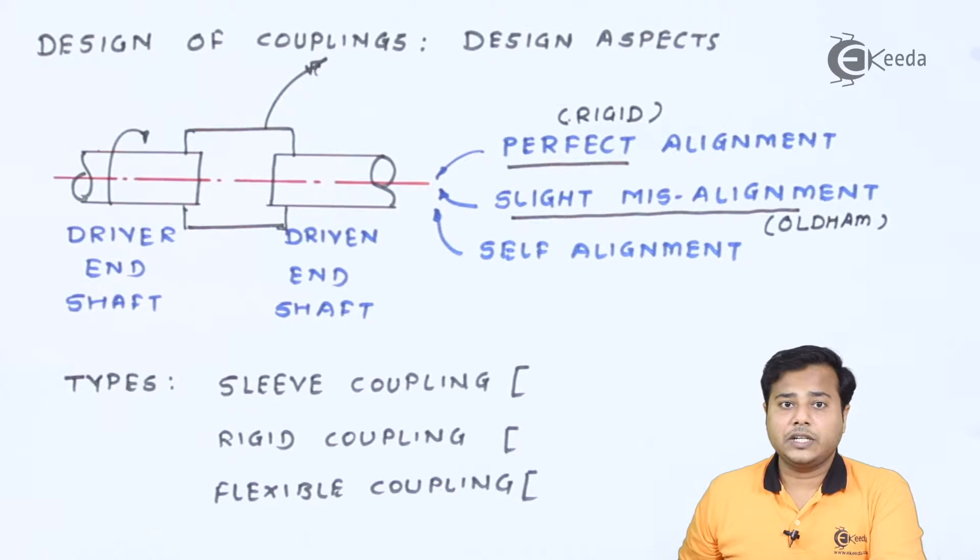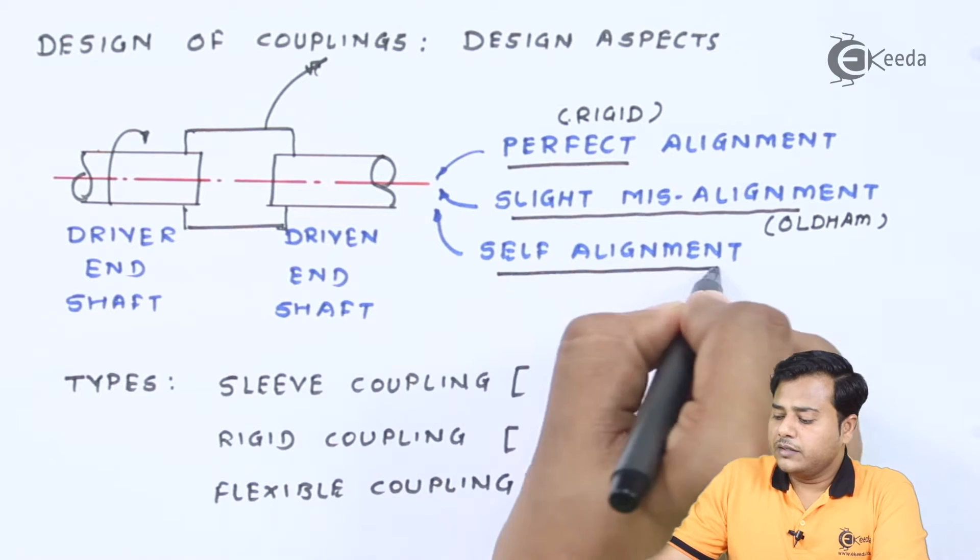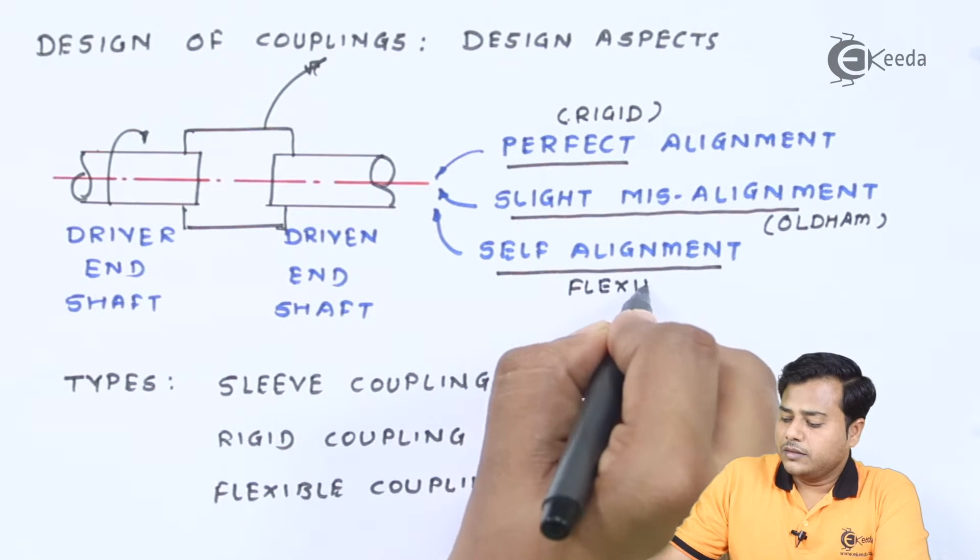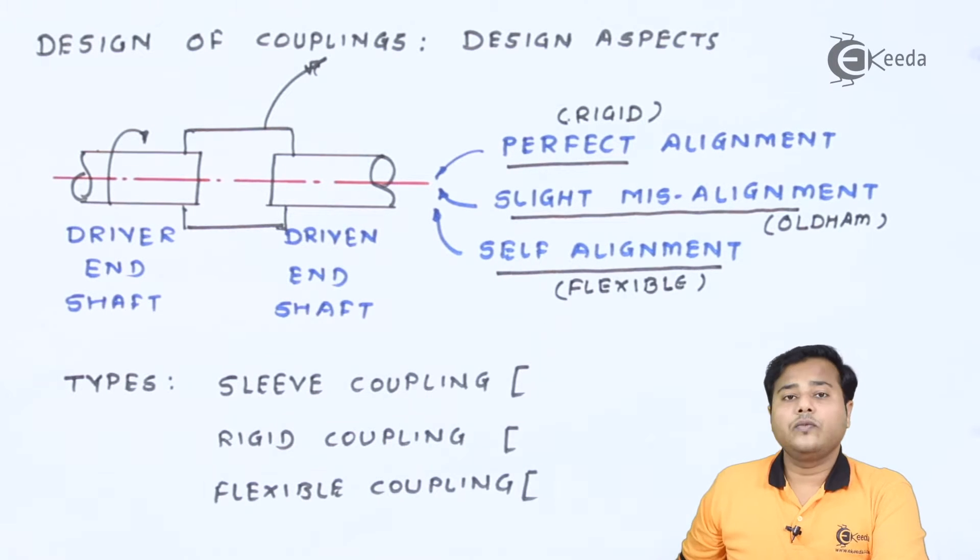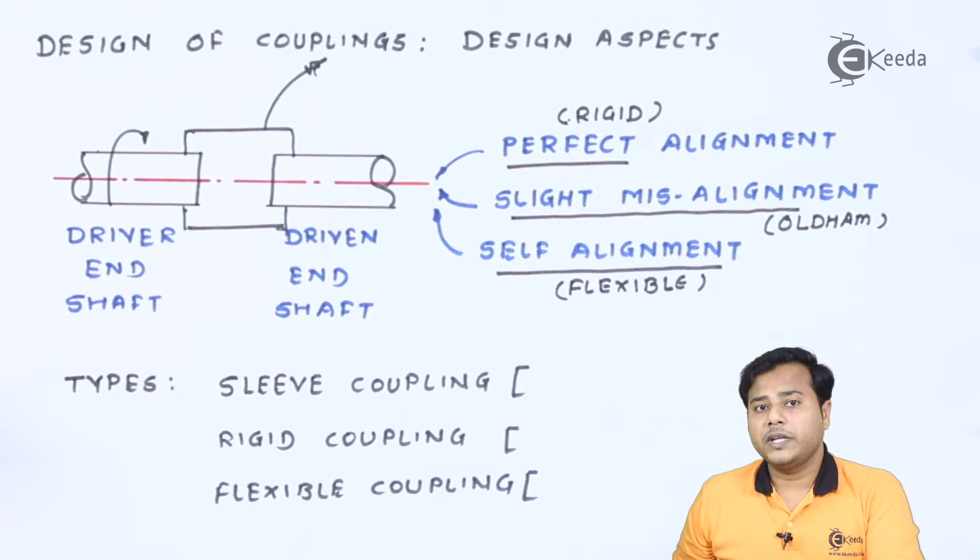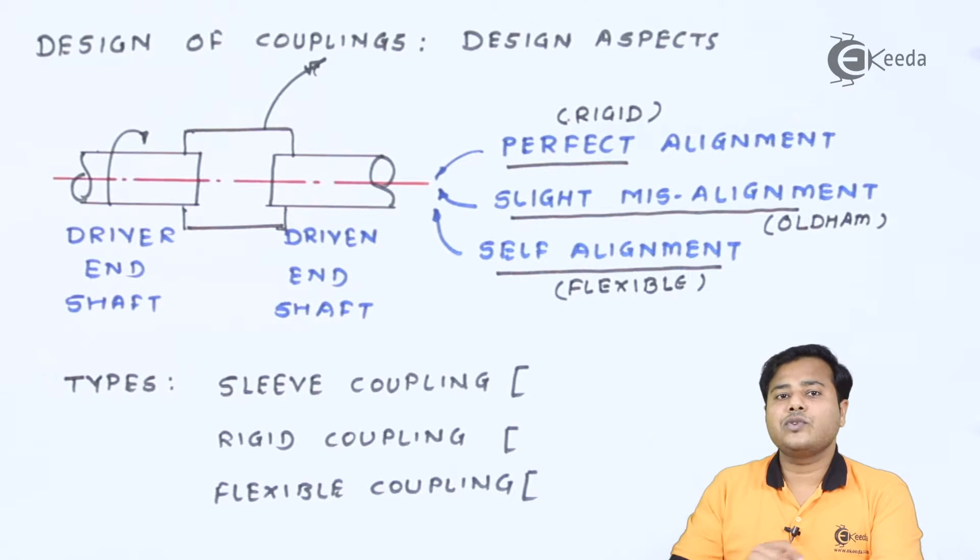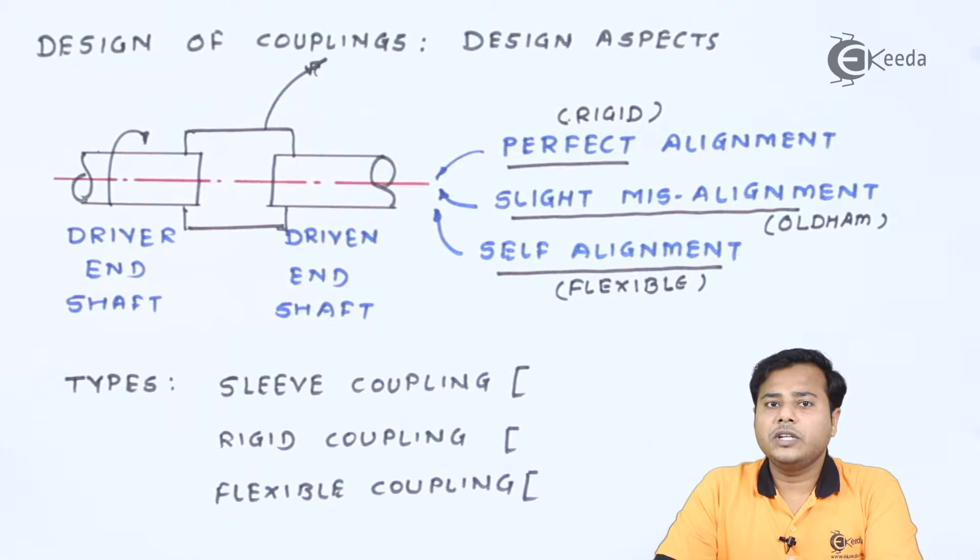And there is the third kind of shaft alignment that is the self-alignment. In this case, depending upon the coupling, the shafts will align themselves by some means. And there, we will go for flexible coupling. So these are the basic three types of various couplings that we are going to study as far as the design aspects are concerned. And we will solve the numerical based on these particular couplings.